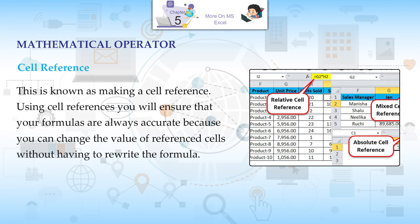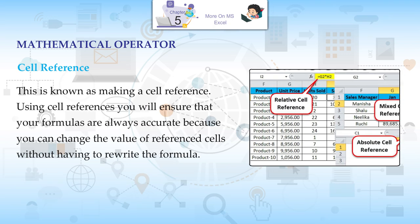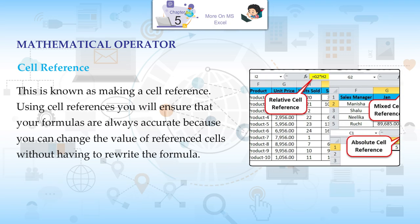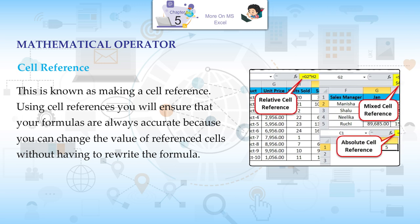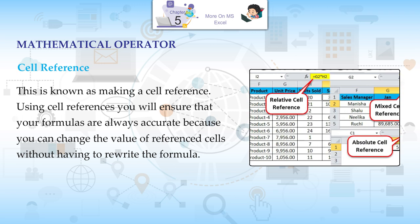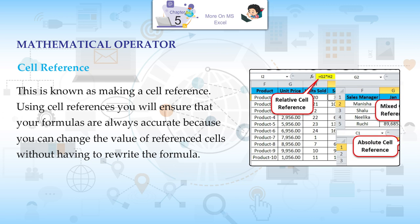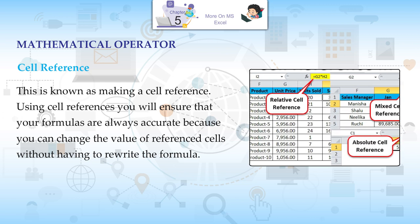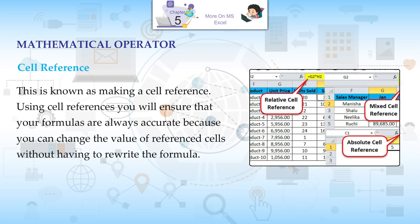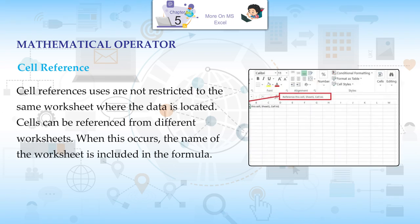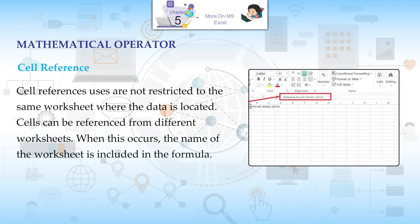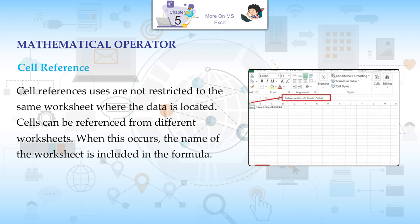This is known as making a cell reference. Using cell references, you will ensure that your formulas are always accurate because you can change the value of referenced cells without having to rewrite the formula. Cell reference users are not restricted to the same worksheet where the data is located.